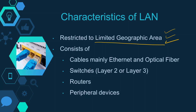The LAN consists mainly of two types of cables: Ethernet and optical fiber. As we can see in this picture, there is a switch and these two cables are Ethernet cables, so this arrangement forms a LAN. The other end of this Ethernet cable may be connected to a server, a PC, or a laptop.